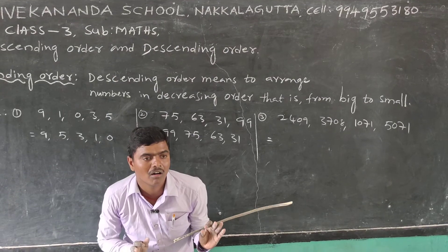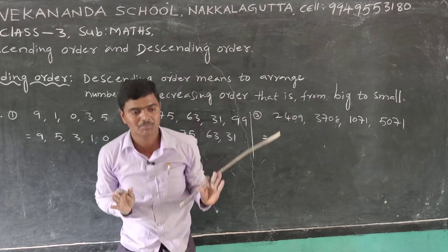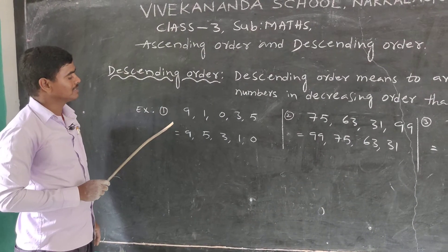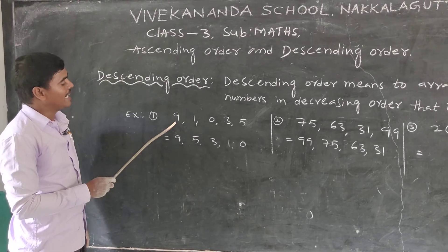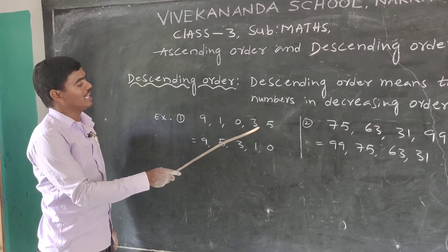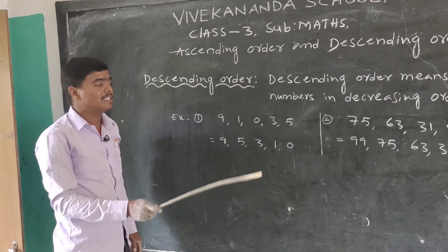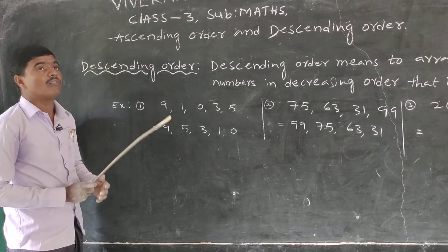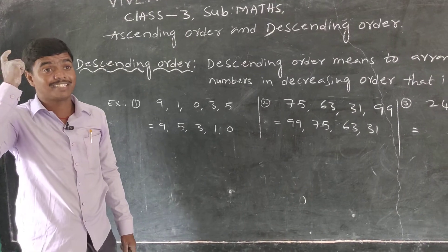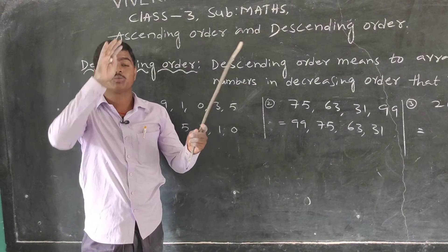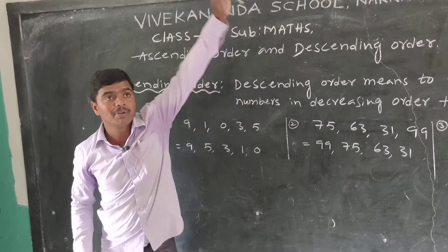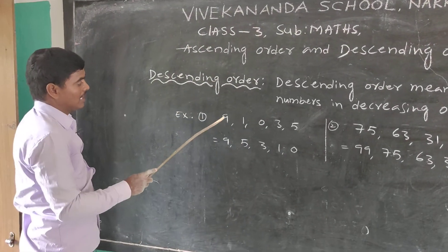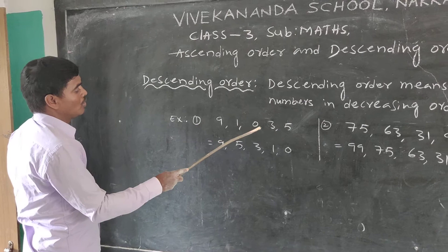Big to small. Now arrange the numbers 9, 1, 0, 3, 5 in descending order. Descending order means big to small. First, read the numbers: 9, 1, 0, 3, 5.